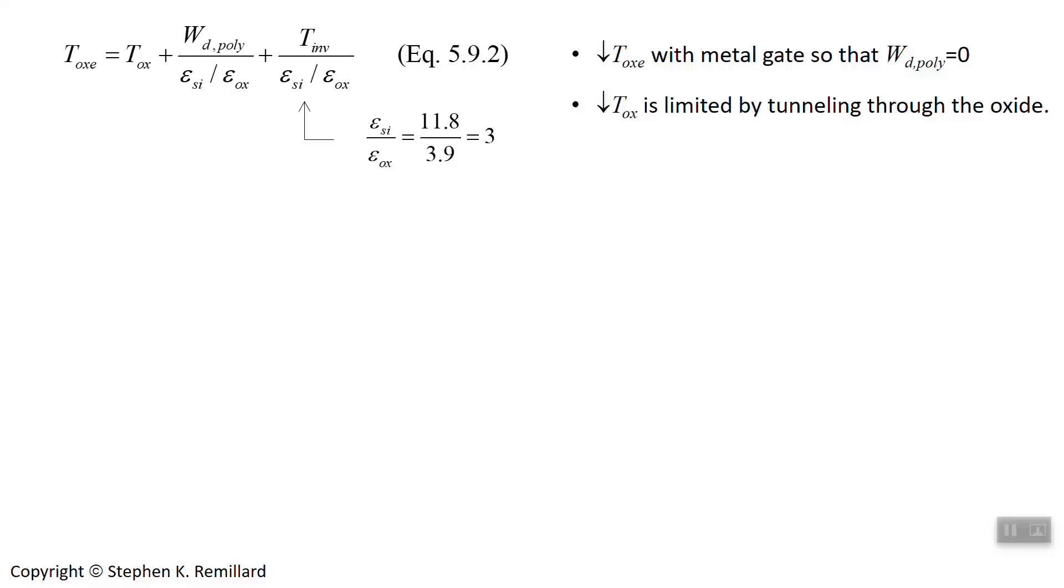One thing you could do to reduce the electrical oxide thickness is to drive the depletion layer in the gate, W sub D poly (polysilicon), to 0. You can do that by using a metal gate.